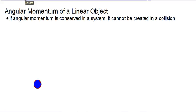If you have a linear object, it still can have angular momentum. I know that sounds very counterintuitive, but we are going to see on the next page why this is.